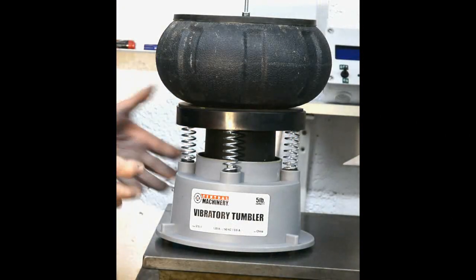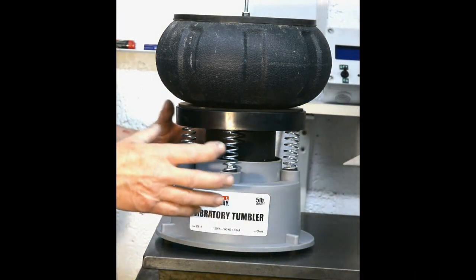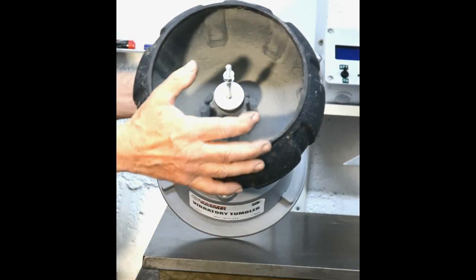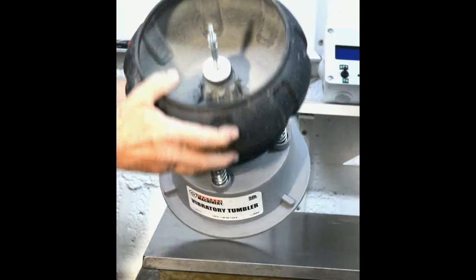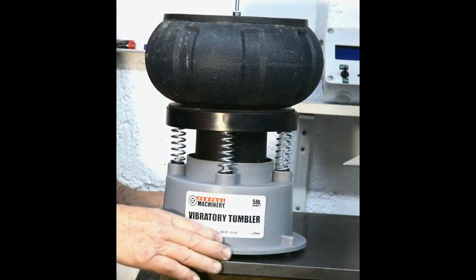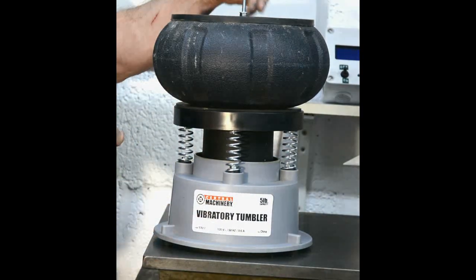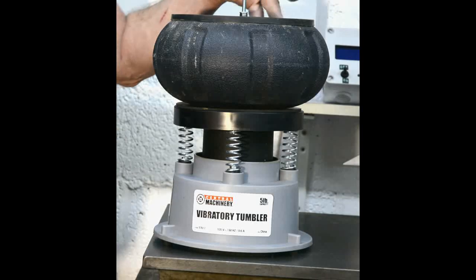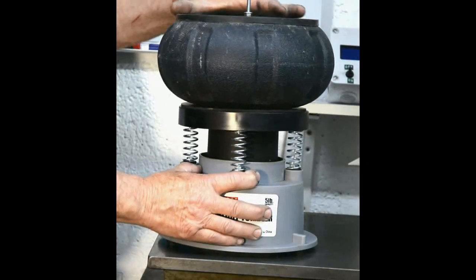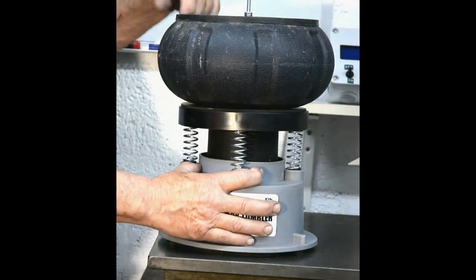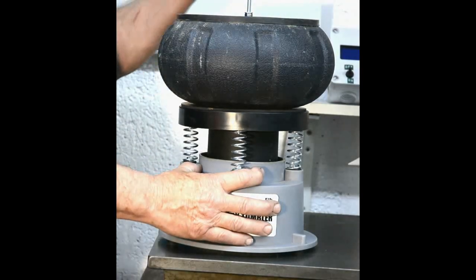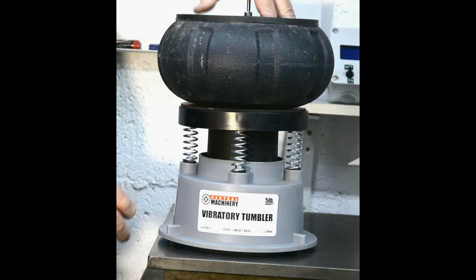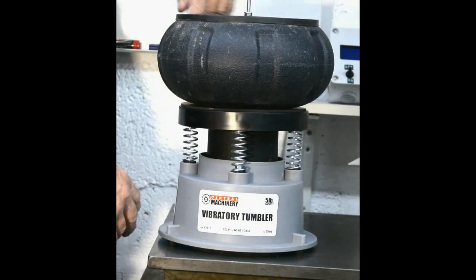For those who are unfamiliar with the vibrating type of tumbler, this is the object of our attention at the moment. Basically, we have a bowl. We put one or two kilograms of some sort of abrasive media in, along with some relatively small parts that we want to polish or de-rust. The bowl is spring-mounted and it's agitated.